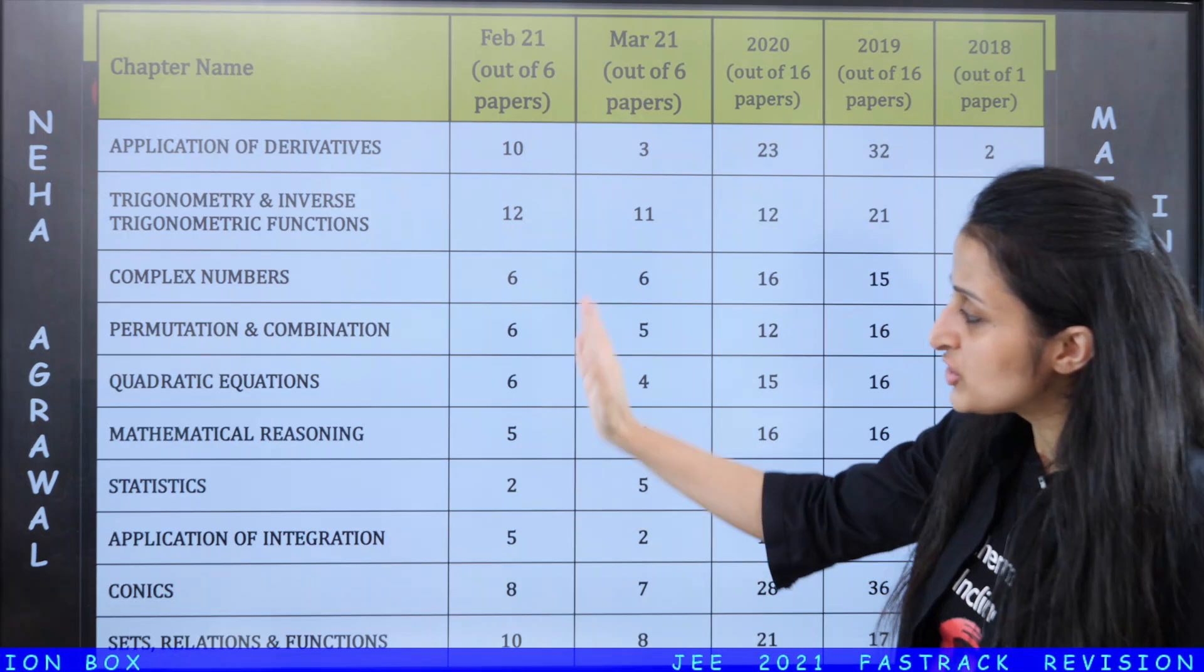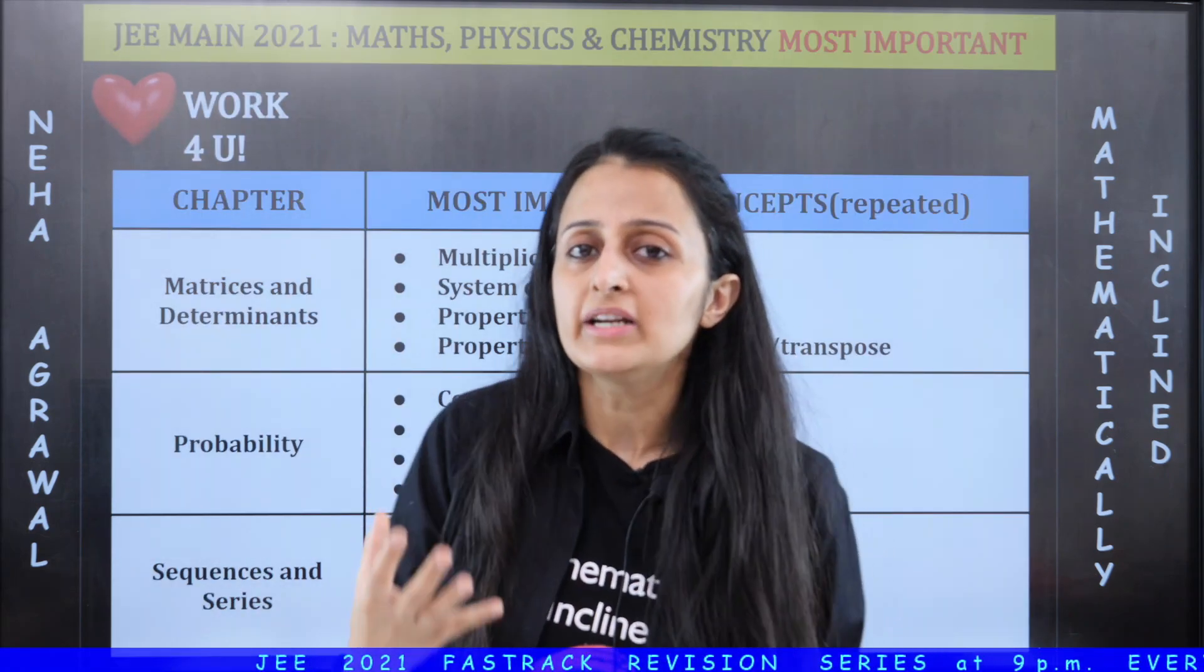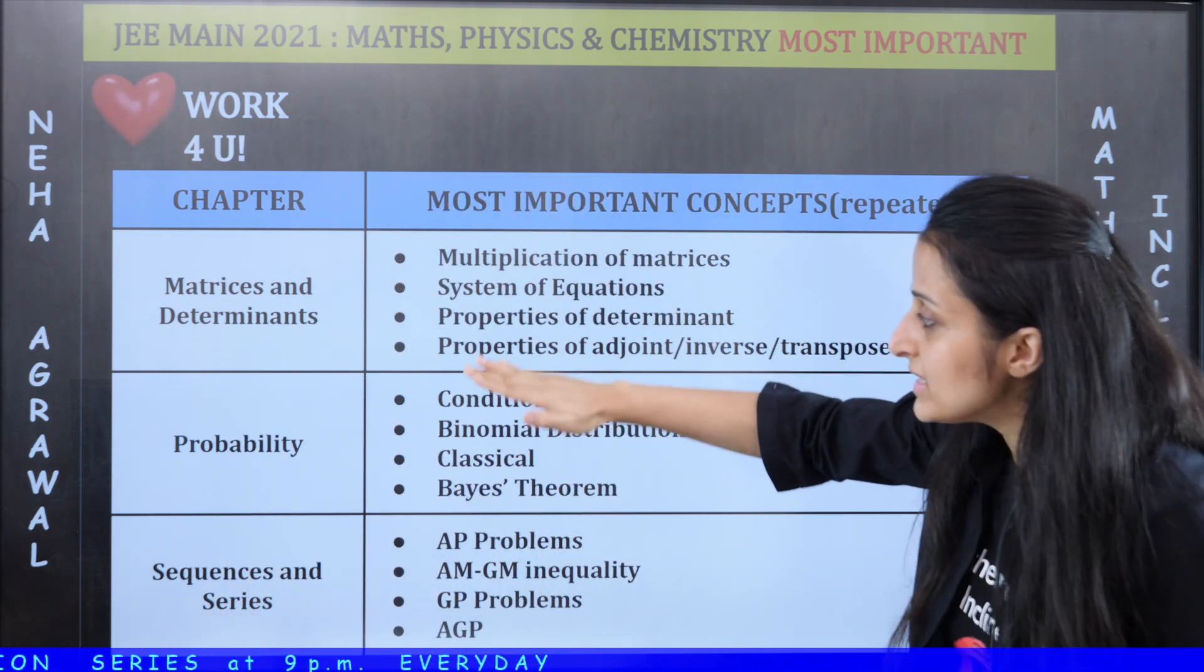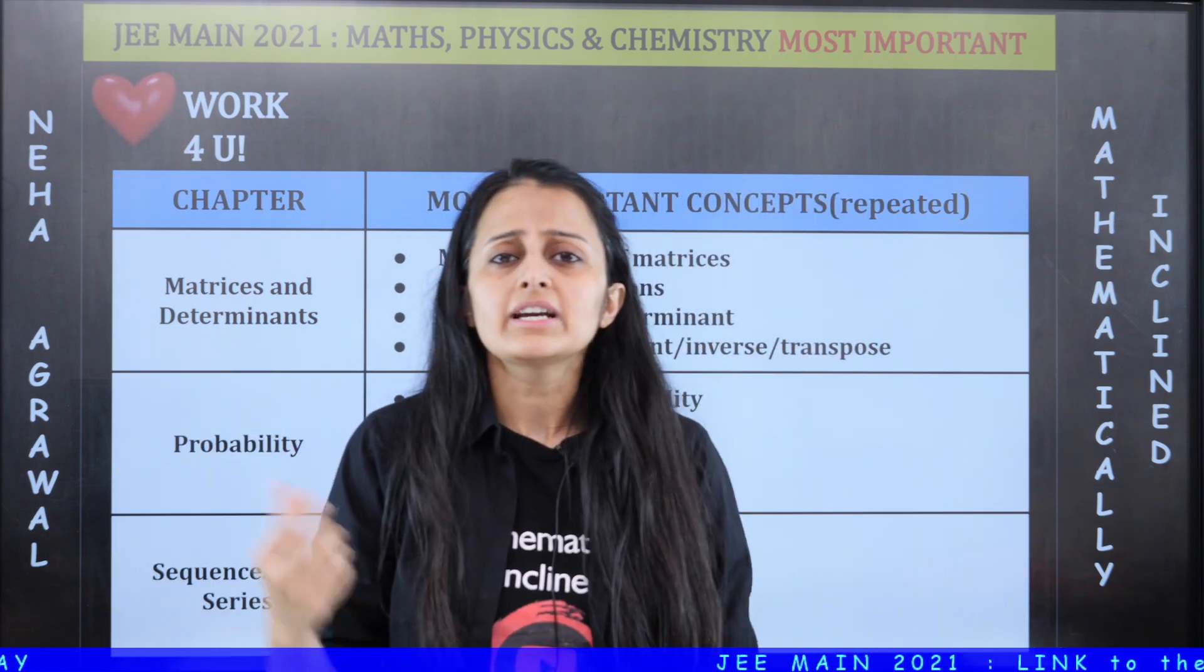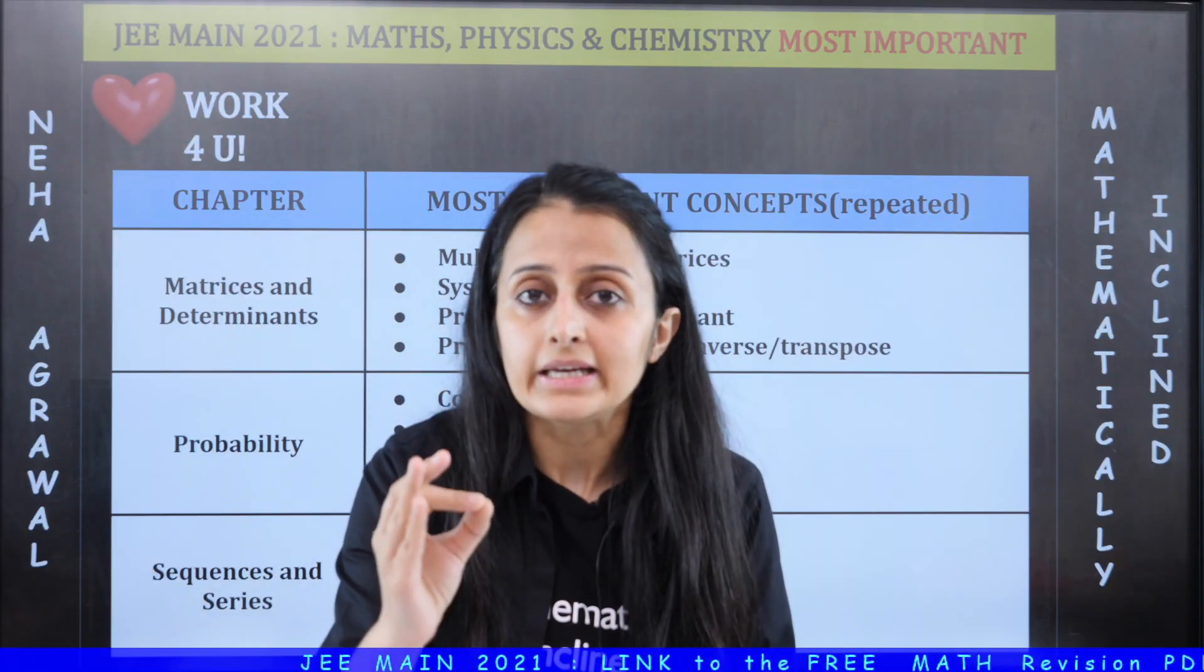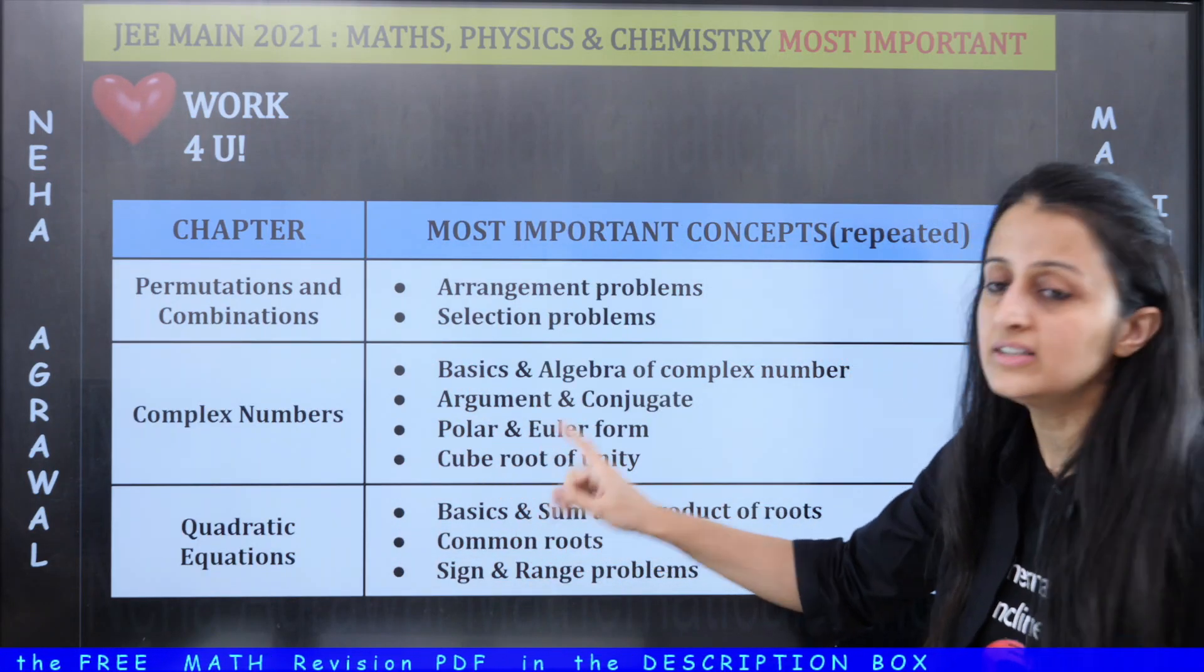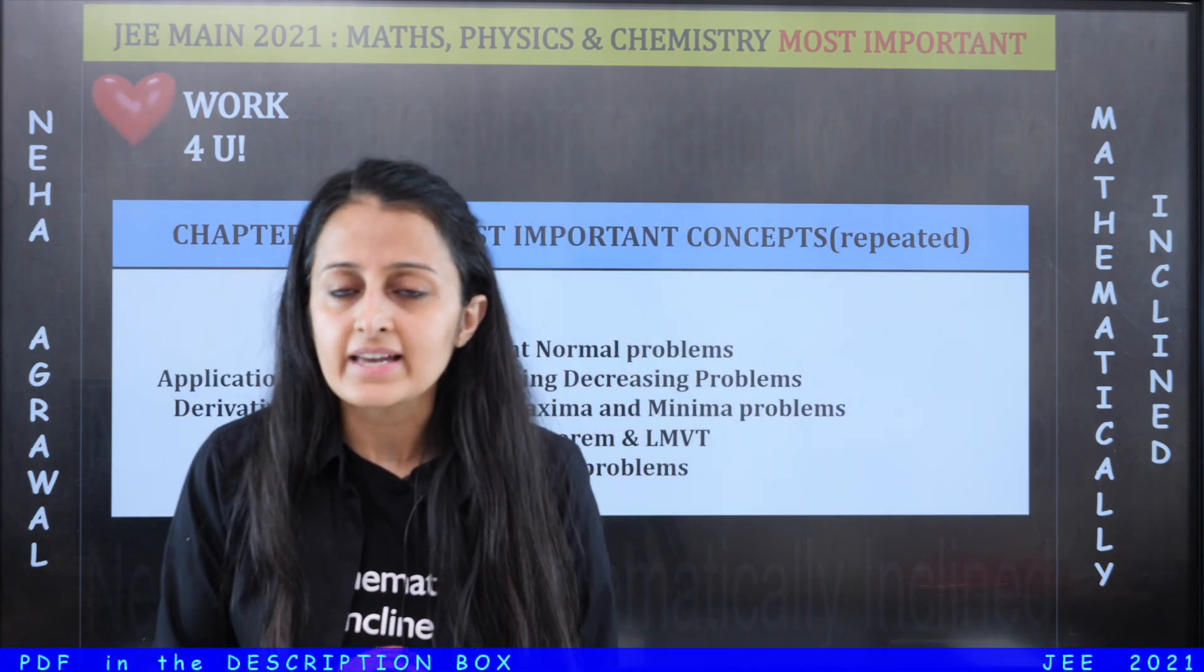To definitely aap ye cheez check kar sakti hai. Iske alawa suppose now I am doing matrices and determinants, to ye aapke liye ek tarike ki checklist hai ki kaun kaun se topics hain jo in mein se maine bilkul bhi miss nahi karne. Phir se bol rahi - in topics ko dene ka matlab ye nahi hai ki in ke alawa aap baaki chapter nahi karo. Nahi, in ka matlab hai ki ye aapke liye checklist hai ki achha agar maine yaha par complex numbers kiya to in topics 100% kar liya hai, right? Similar exercise has been done for your physics and chemistry also.